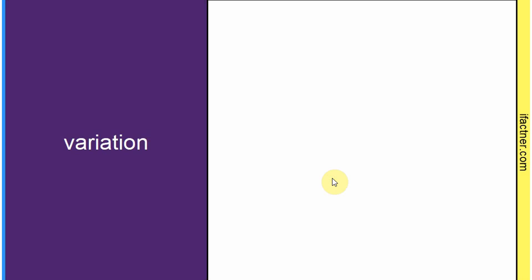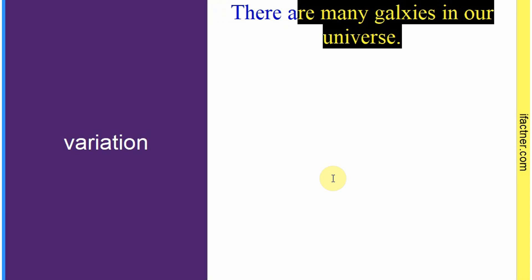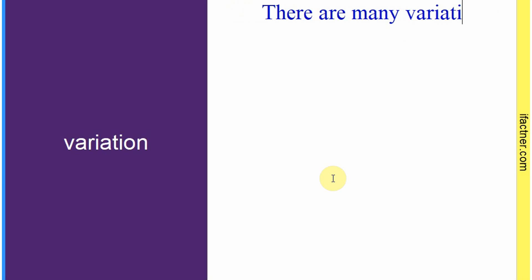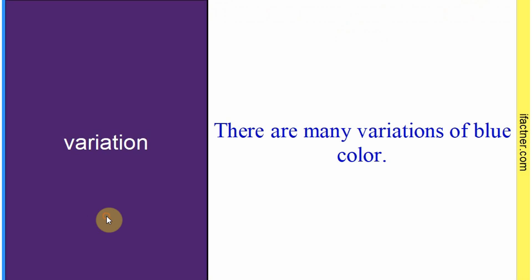Word hai: 'variation'. Sentence banaate hain meaning samajhne ke liye: 'There are many variations of blue color.' Neele rang ki bahot zyada different variations hain — different chhoti chhoti qismein hain jaise light blue, dark blue, turquoise aur is tarah ke jo colors blue ke hain. Toh us mein variations hain — chhoti changes hain. Sentence banaaya: 'There are many variations of blue color.'